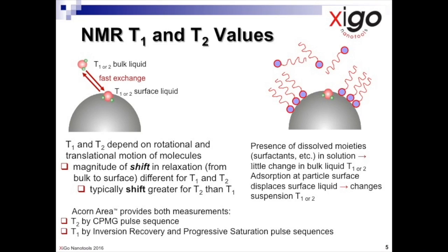That is why, in a measurement, we observe a single relaxation time. The principle of surface particle analysis via relaxation NMR is based on the fact that the liquid in contact with the particle surface relaxes much more rapidly.